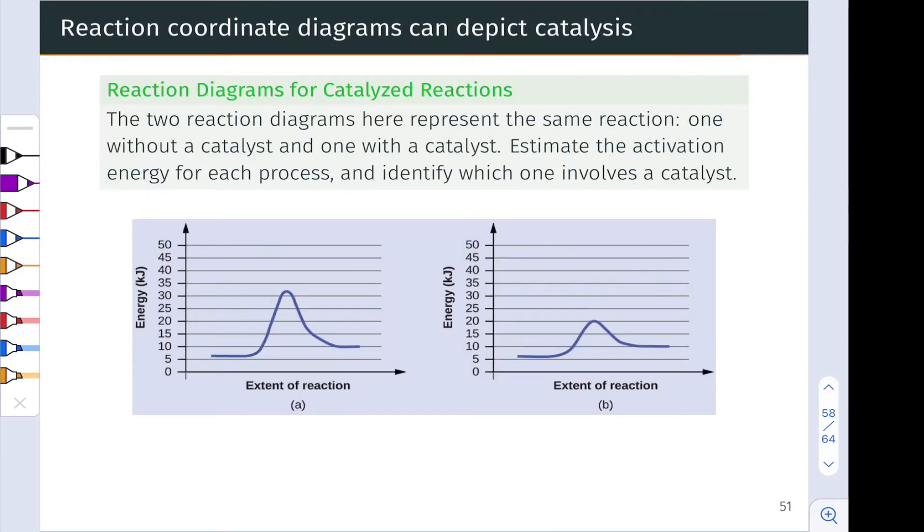This problem draws on our understanding of reaction coordinate diagrams and how they relate to catalysis. We're given two reaction coordinate diagrams for the same reaction. They have the same delta H. I'll let you verify that on your own. It is worth verifying. One does involve a catalyst and one does not. The problem asks us to do two things. First of all, estimate the activation energy for each process. And then secondly, identify which one involves a catalyst. One of these is a catalyzed pathway and the other is not.